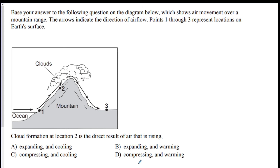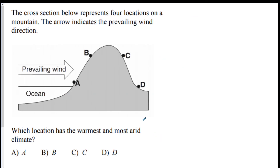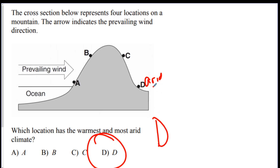Another windward-leeward question: cloud formation at location two is the result of air that does what? Clouds — REC DC. Remember: rises, expands, cools to the dew point, and condenses. So we want cooling and expanding. Answer A. Which location has the warmest and most arid climate? The answer is D. Arid means dry and warm — that's on the leeward side, the side without the wind. Since this side has the wind, this is the windward. Makes sense.